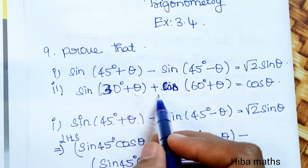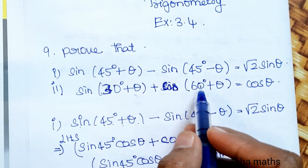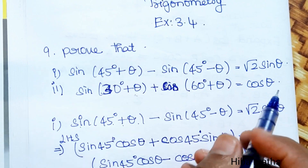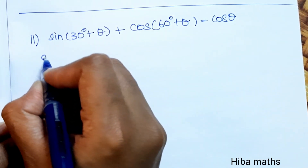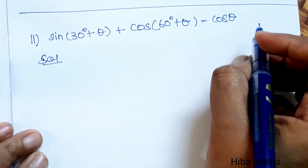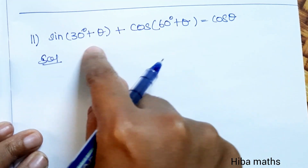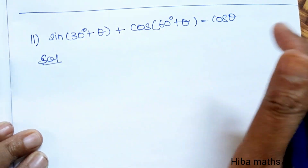Next, prove that sin(30°+θ) plus cos(60°+θ) is equal to cosθ. We use the sin(A+B) and cos(A+B) formulas for the LHS.